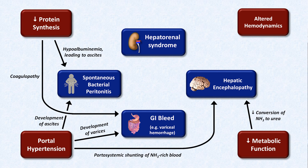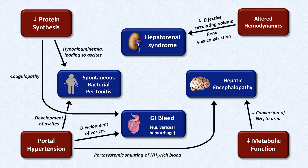Peripheral vasodilation leads to decreased effective circulating volume, triggering renal vasoconstriction with the end result of hepatorenal syndrome. And returning back to decreased protein synthesis, the associated hypoalbuminemia also contributes to the low effective circulating volume.